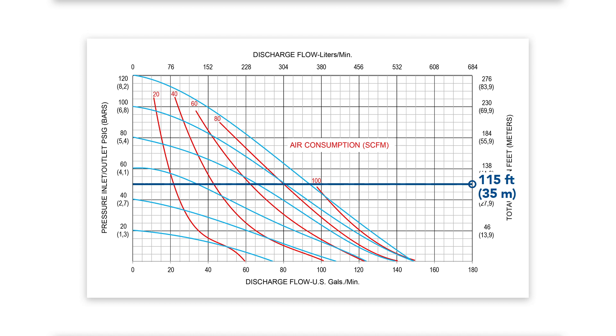Refer to the AODD pump performance curve once again and adjust the operating point to the viscosity correction flow rate of 30 gallons per minute. This allows you to reassess the new required air inlet pressure, which will be 60 PSI, as well as the increase in air consumption, which will be 30 SCFM.